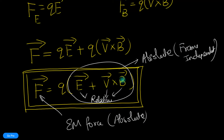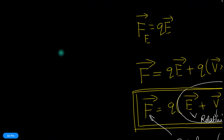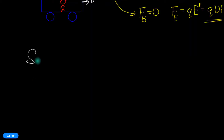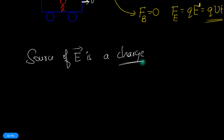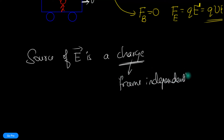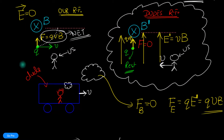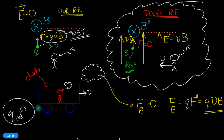Here is a very good question: we know the source of electric fields is a charge, and charge is frame-independent — that is one of the fundamental properties of charge. So if charge is frame-independent, and in our reference frame the electric field is zero, there shouldn't be any net charge anywhere in the universe in our frame. But in the dude's reference frame a net charge must exist because that net charge is creating an electric field. How is that possible?